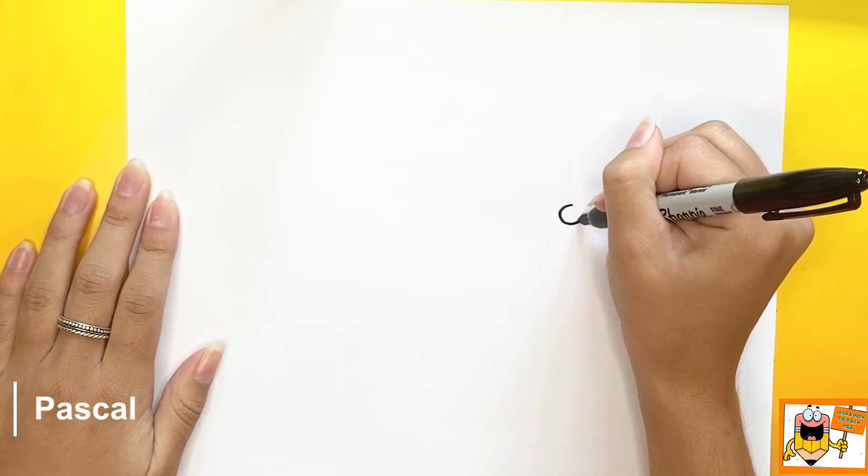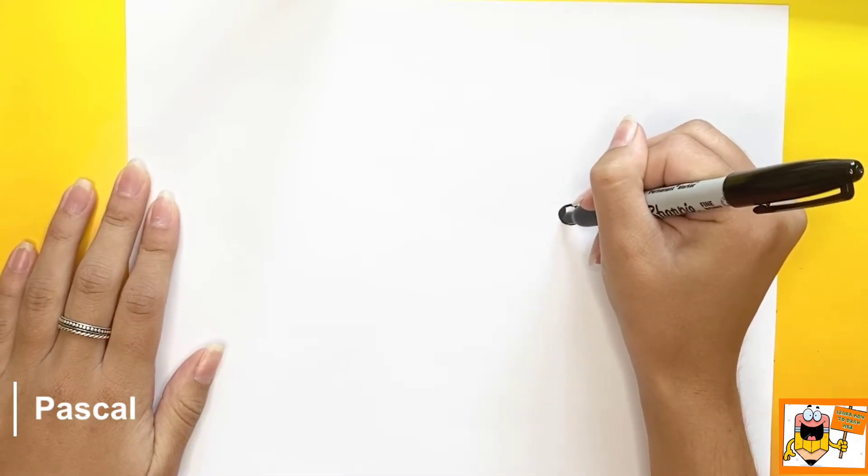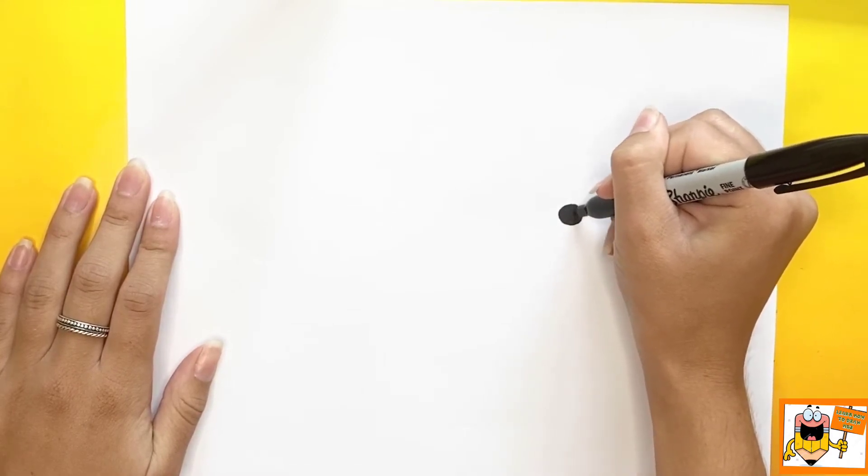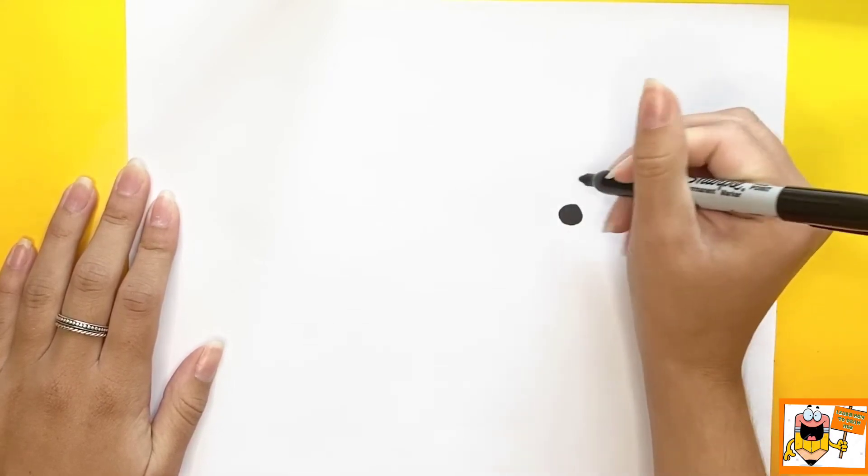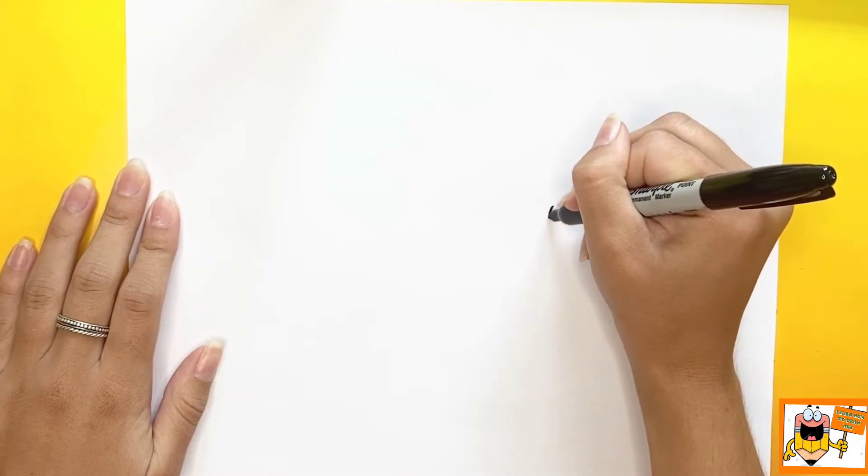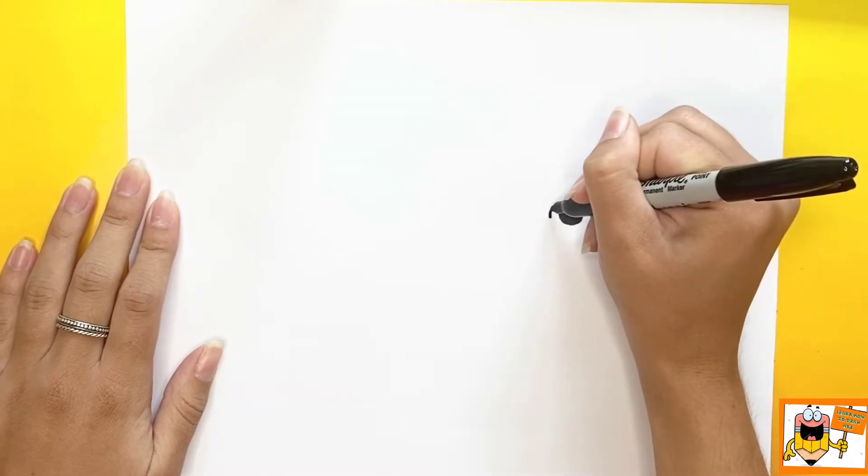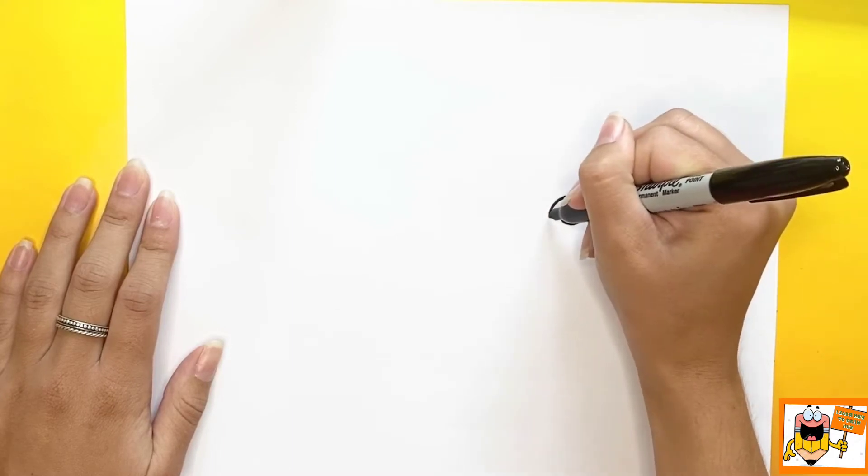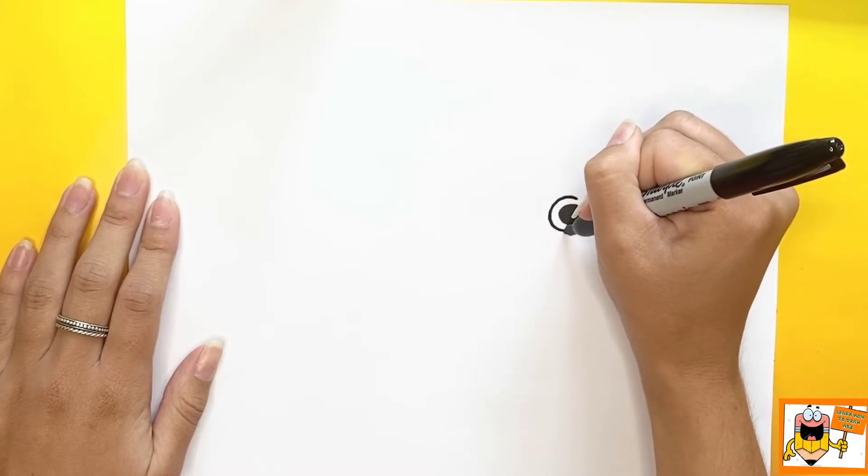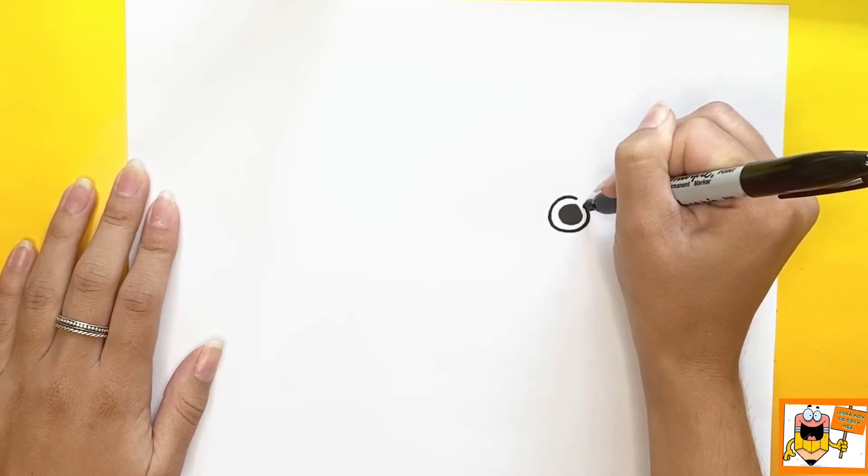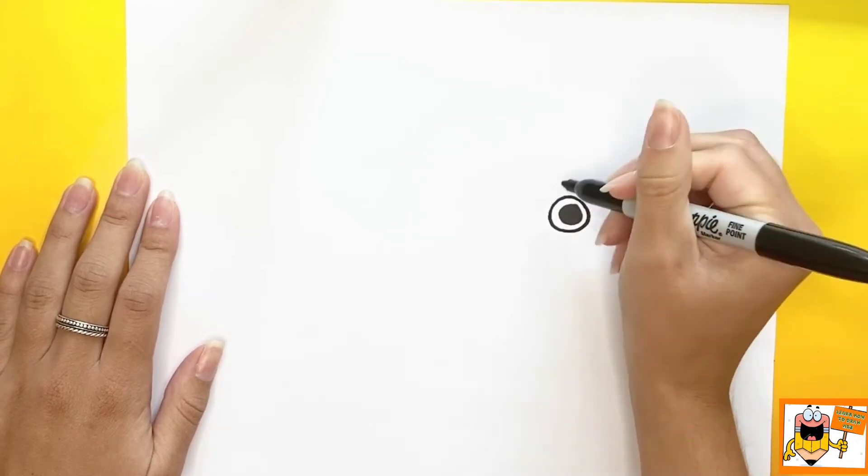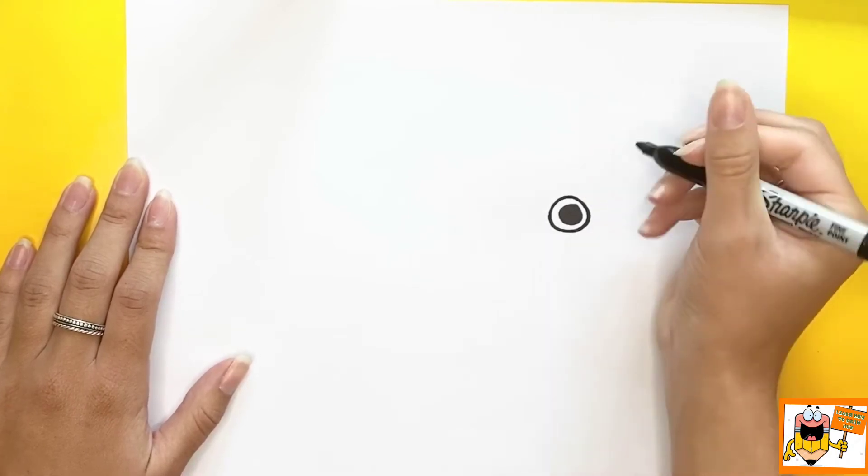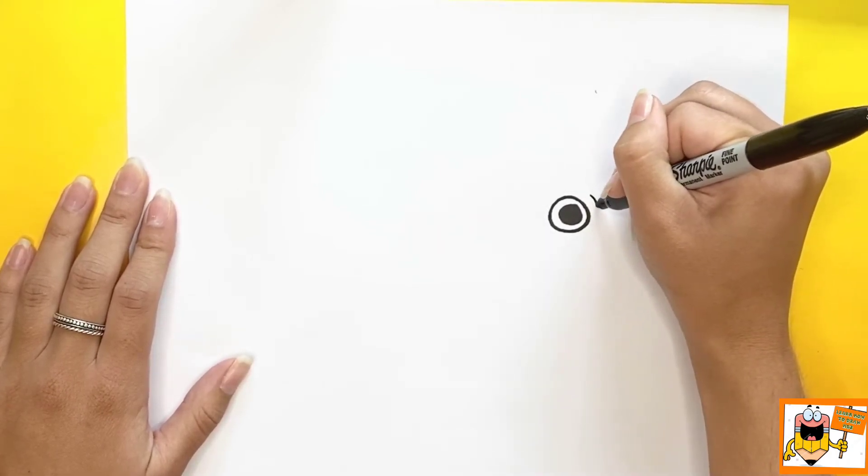We're going to start off by drawing a circle and coloring it in black. Then we're going to draw a circle outlining the circle that we just made, and next we're going to outline that circle one more time.